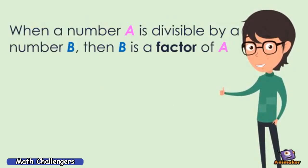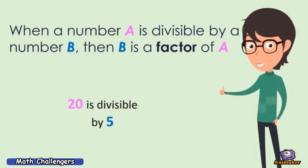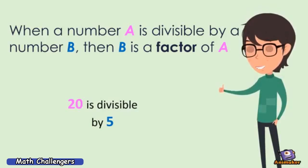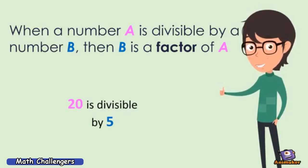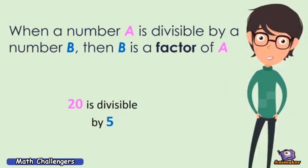When a number A is divisible by a number B, then B is a factor of A. 20 is divisible by 5, because when you divide 20 by 5 the answer is 4, there is no remainder. So if 20 is divisible by 5, then 5 is a factor of 20.